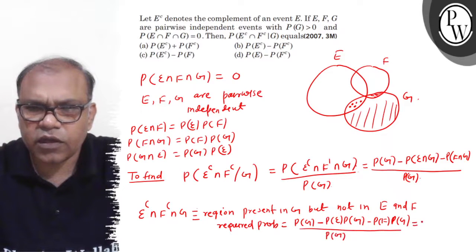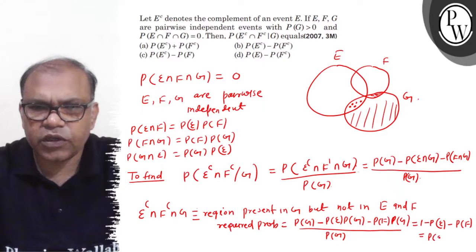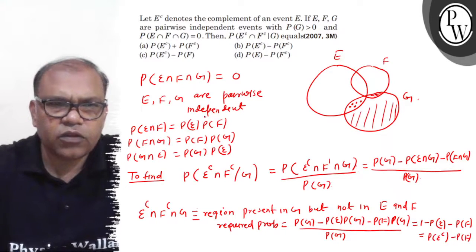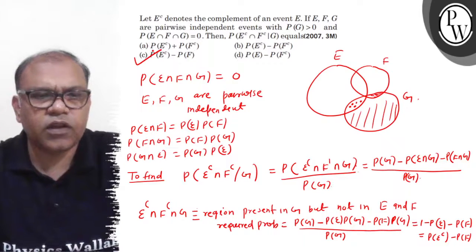This simplifies to 1 minus P(E) minus P(F). And 1 minus P(E) you can write as P(E^c) minus P(F). And your correct option is option C. I hope you understood well, thank you.